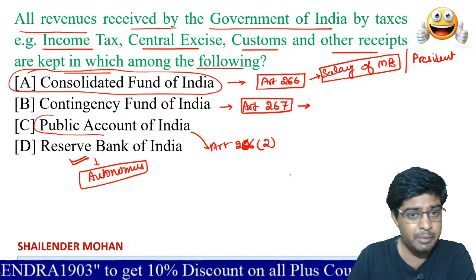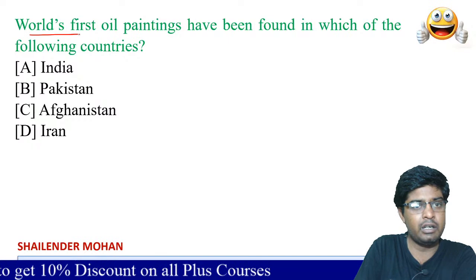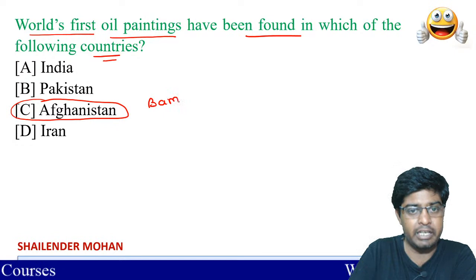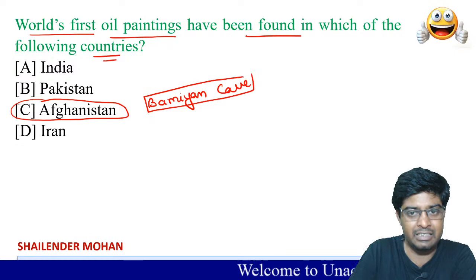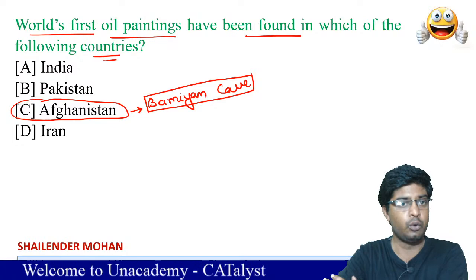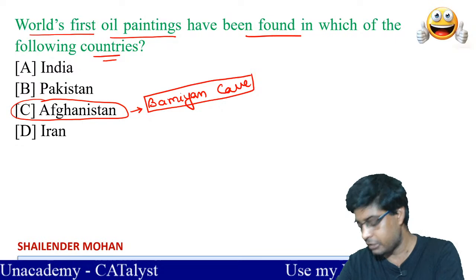The world's first oil painting has been found in Afghanistan, specifically in the Bamiyan cave. This is a very important fact — the first oil painting was discovered in the Bamiyan cave of Afghanistan. Everyone should note this point.